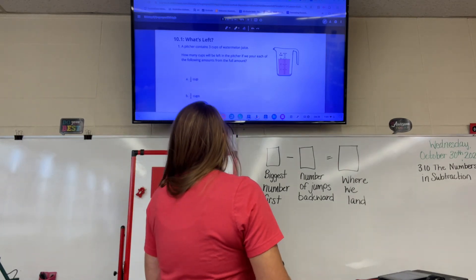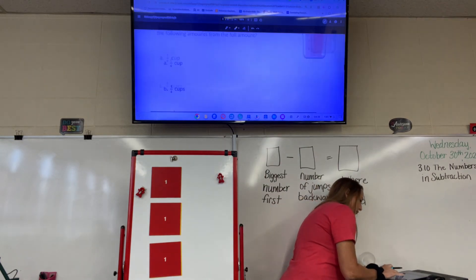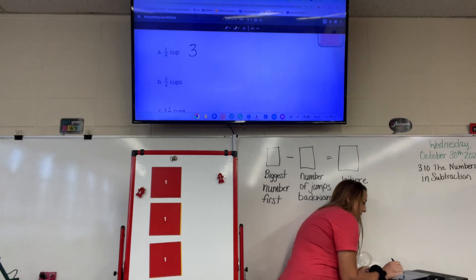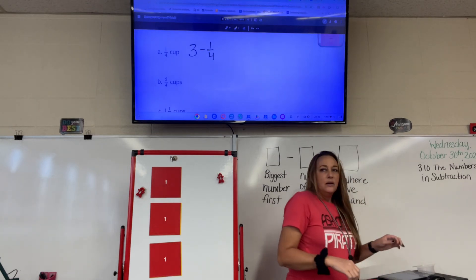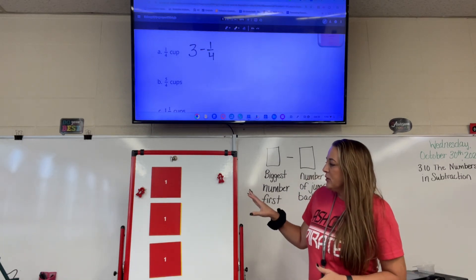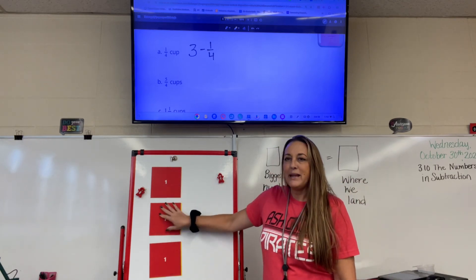We need to take away one-fourth cup. First we need to write the equation. Write this down: three minus one-fourth. Now to have a visual that goes with this, I've brought this over. So I have three cups.